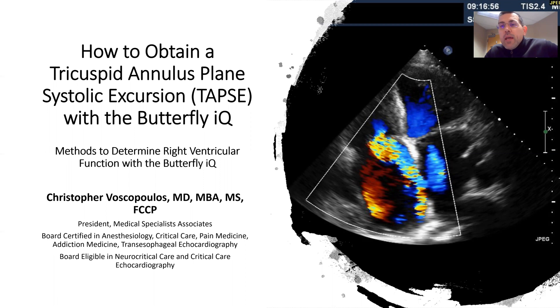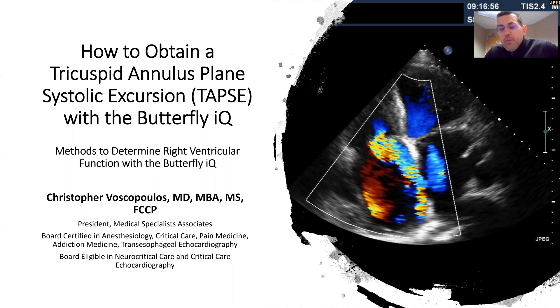One area that we can use it for is in right ventricular function assessment. In particular, we'll talk about tricuspid annulus plane systolic excursion, or better known as TAPSE.